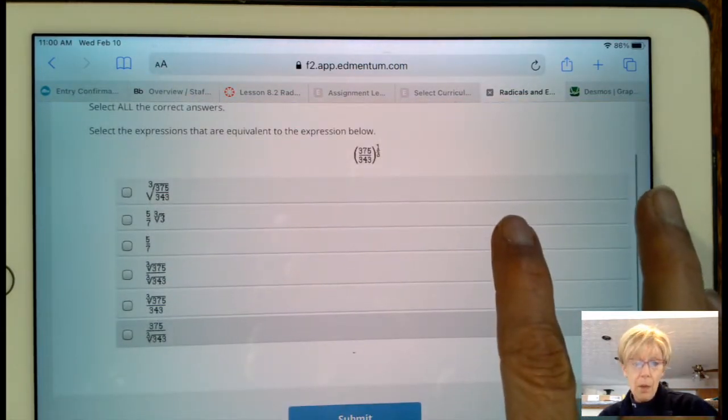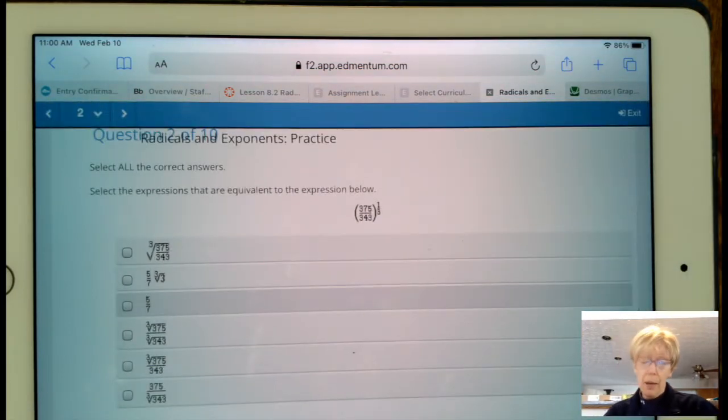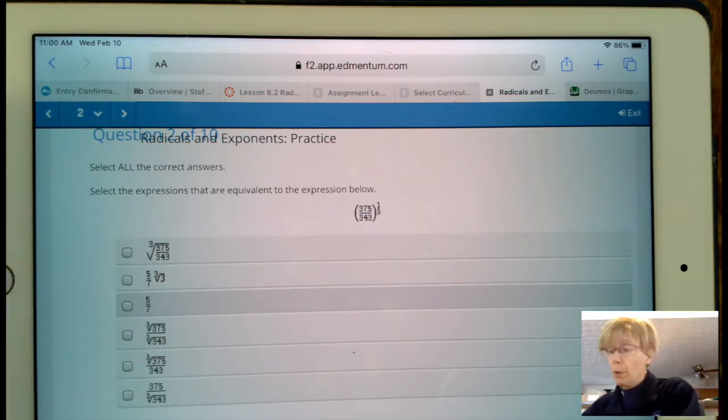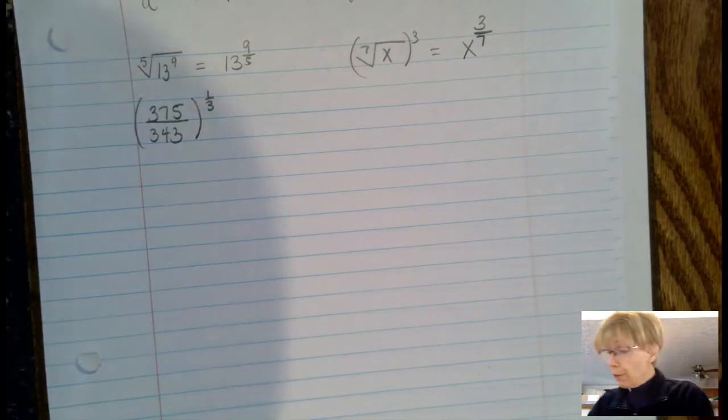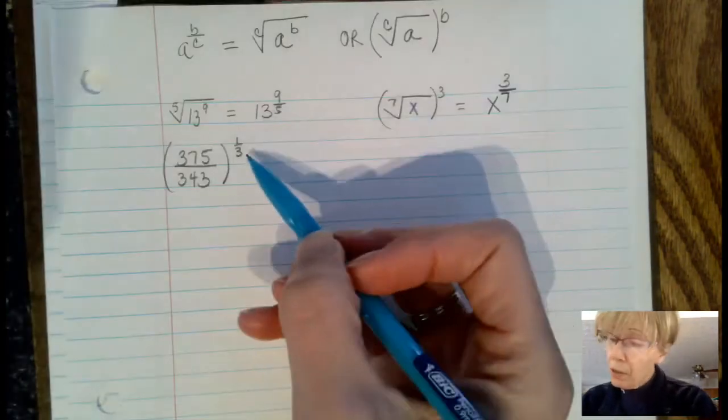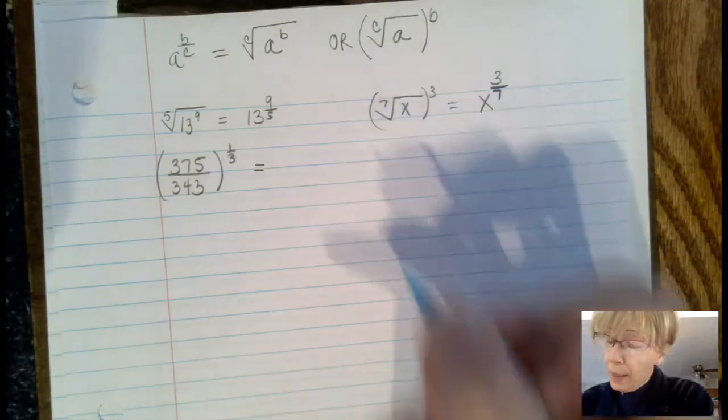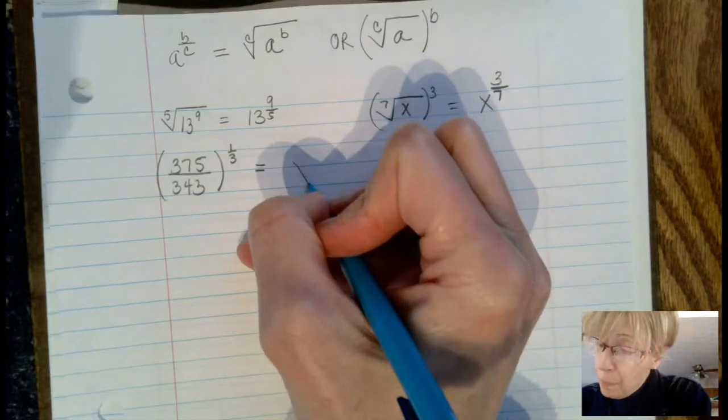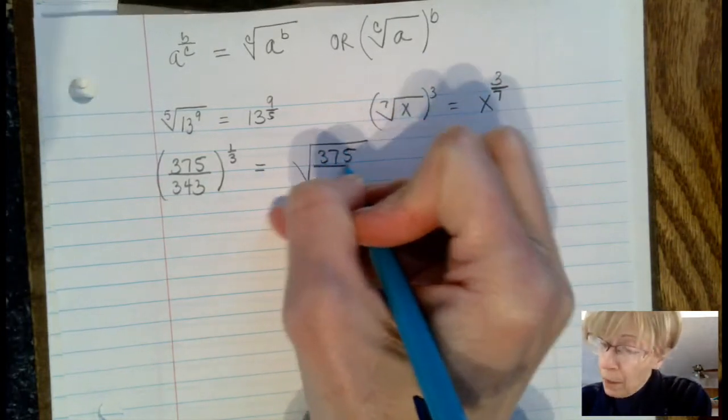I'm going to flip over to my notebook paper. The first thing is when we're raising something to the one-third power, the same fraction, 375 divided by 343. This 3 in the bottom of the fraction goes in the checkmark part of the radical, called the index.